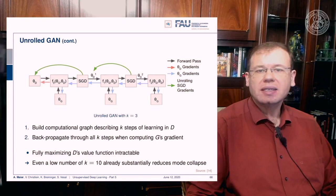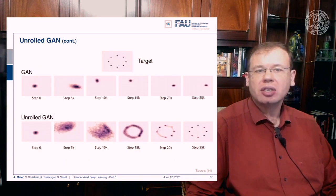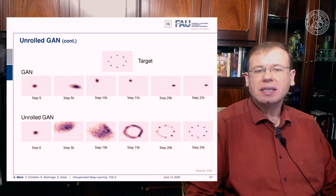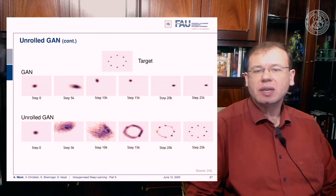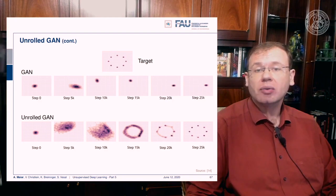Here is an example for the unrolled GAN. With the standard GAN you see alternating mode behavior. With the unrolled GAN, at step 0 you have the same distribution, but already at step 5,000 the distribution is spread over a much larger area. By step 10,000 the entire domain is filled; after 15,000 steps a ring forms; after 20,000 steps certain maxima appear; and after 25,000 steps the model successfully mimics the original target distribution.